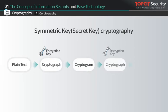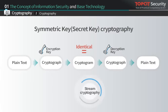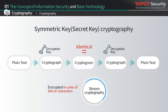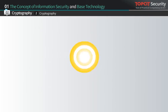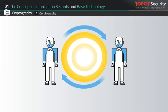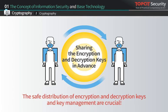Symmetric key cryptography refers to cryptography that uses identical keys for encryption and decryption. Depending on the unit of information used to encrypt, it can be classified into stream cryptography, where the encryption unit is by bit or characters, and block cryptography, that encrypts information by block units. To send and receive information in symmetric key cryptography, the sender and receiver must share the keys in advance. Since all information could be exposed at once when the key is exposed, it is crucial to distribute and manage keys safely.